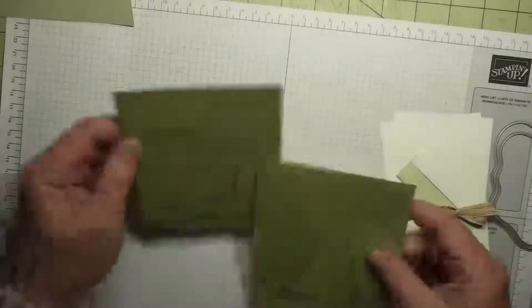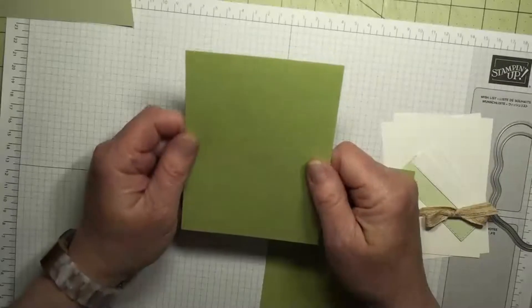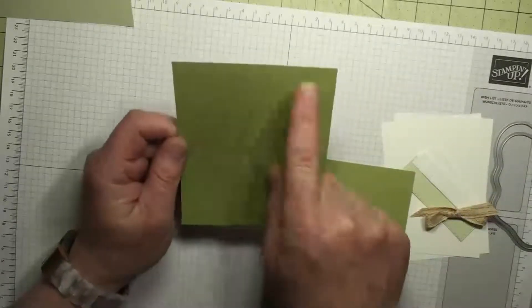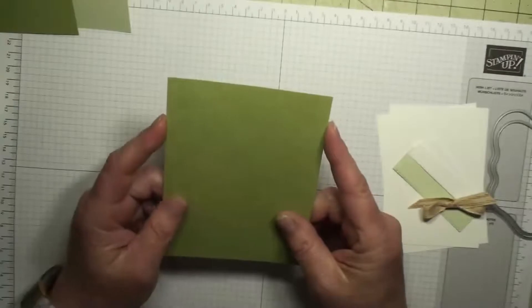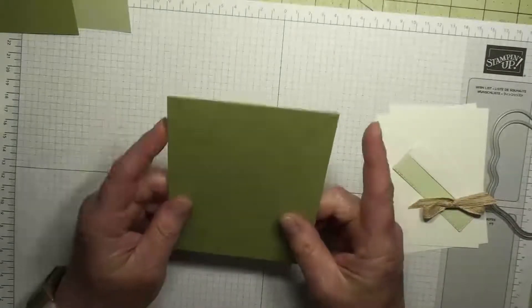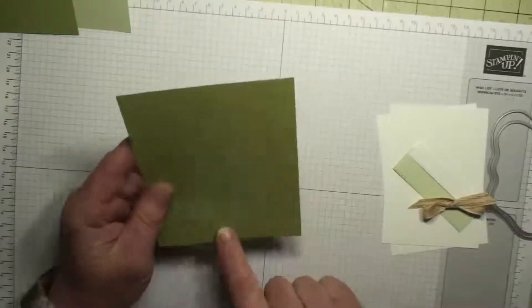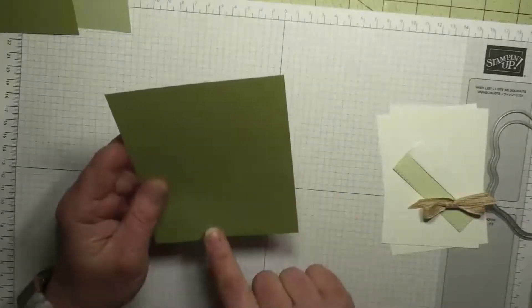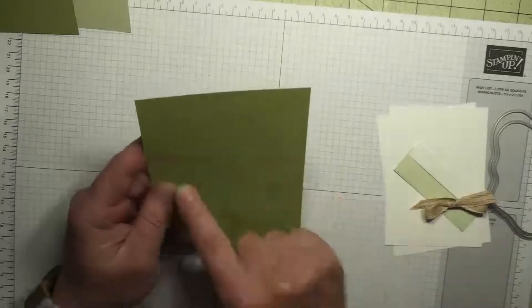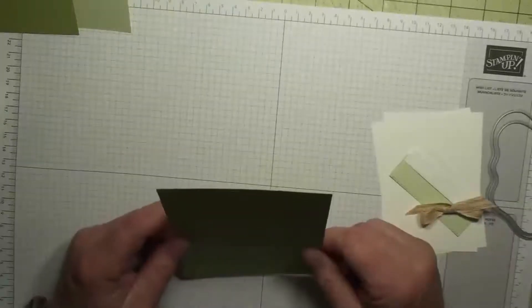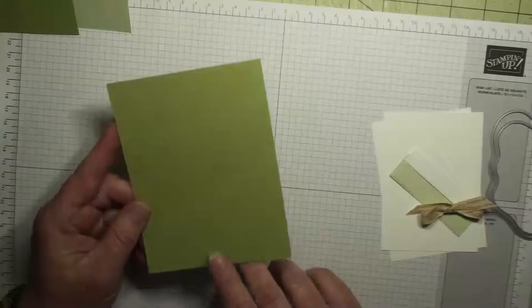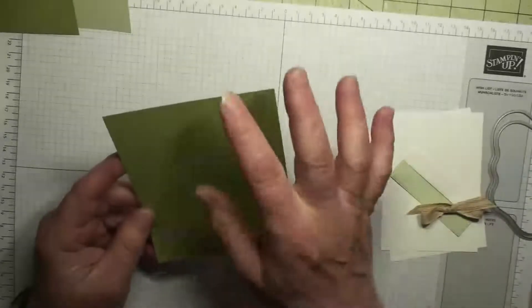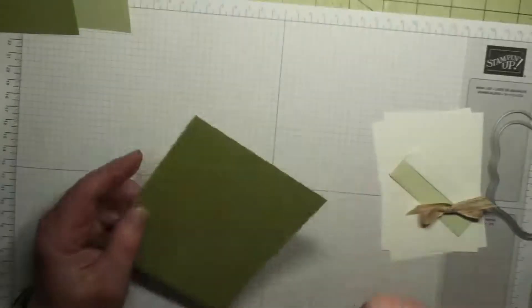We need this is our front mat for the front and this is four by five and a quarter. This is for the inside of our diorama and this is a sixteenth of an inch shorter on both edges than five and a half by four and a quarter. So it's actually four and three sixteenths by five and seven sixteenths. So if you cut it five and a half by four and a quarter and just shave off a hair, that's what you need.